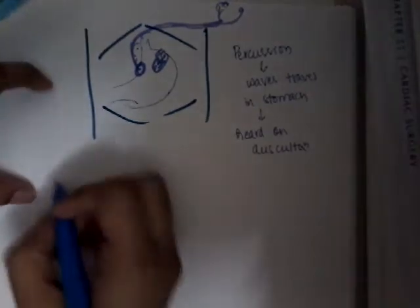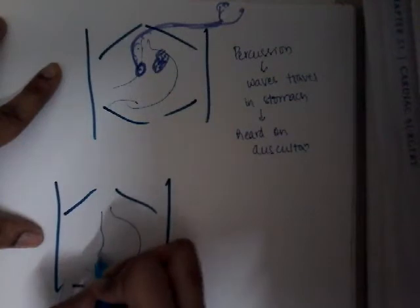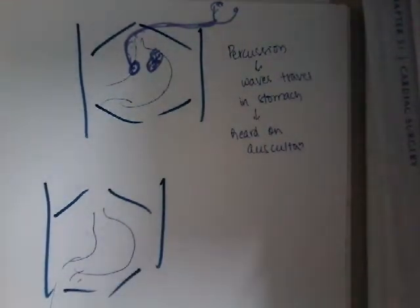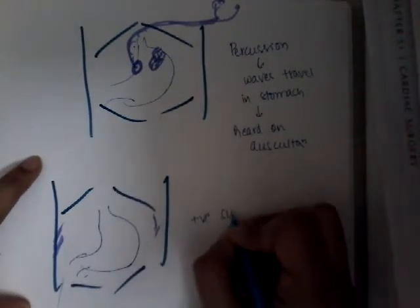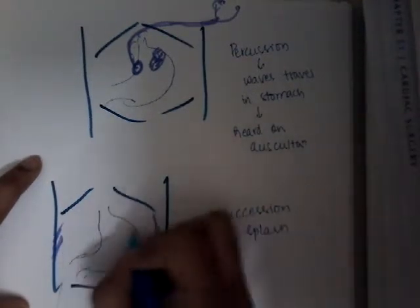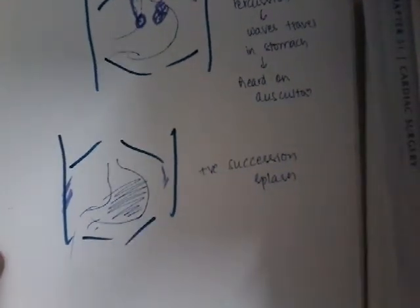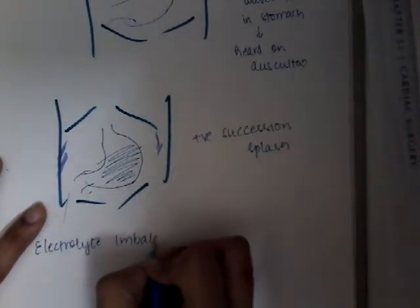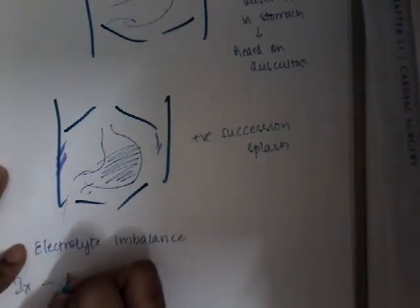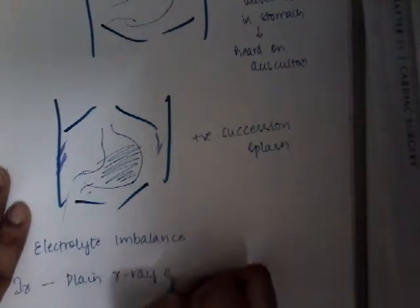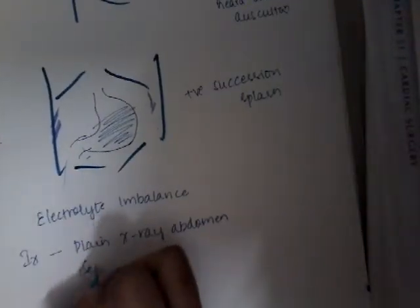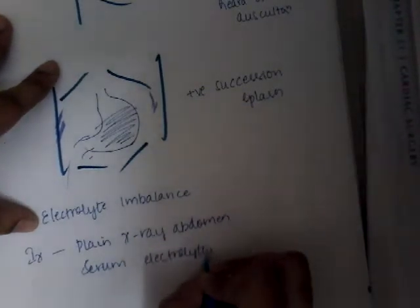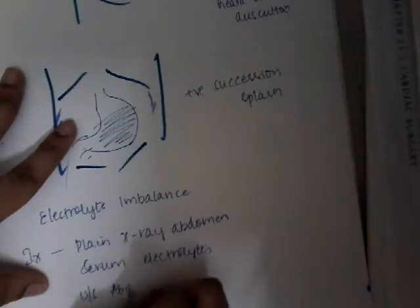The best investigation is plain X-ray abdomen. You can also do serum electrolytes and ultrasound abdomen — all these show acute gastric dilatation.